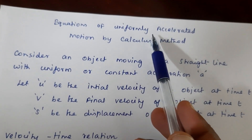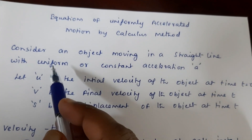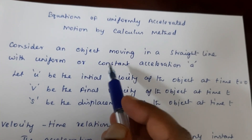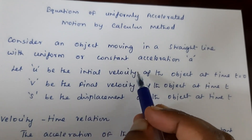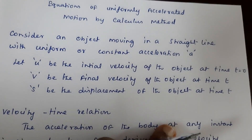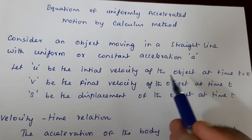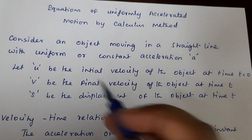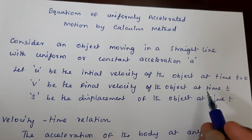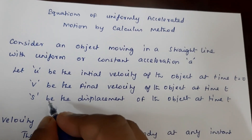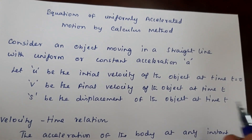Equations of Uniformly Accelerated Motion by Calculus Method. Consider an object moving in a straight line with uniform or constant acceleration a. Let u be the initial velocity of the object at time t equal to 0, v be the final velocity of the object at a particular time t, and s be the displacement of the object at time t.